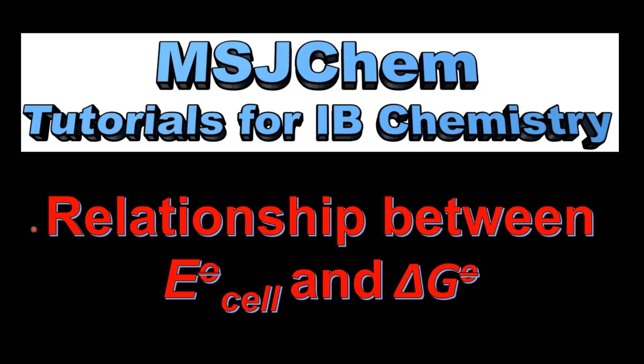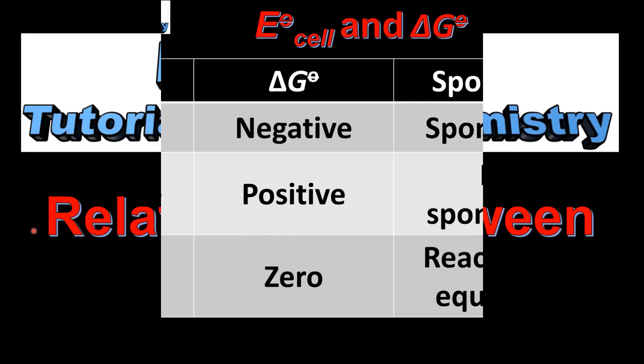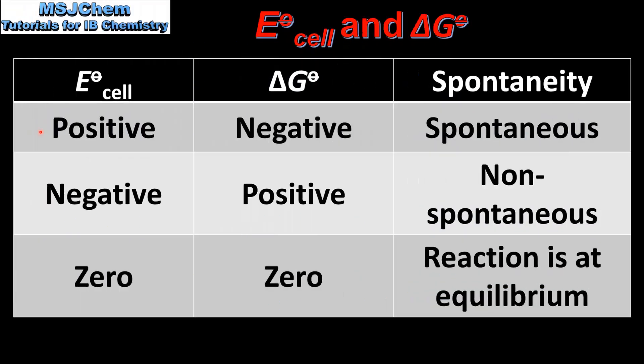This is MSJChem. In this video I'll be looking at the relationship between cell potential and Gibbs free energy. In this table we can see the relationship between cell potential, delta G, and spontaneity.